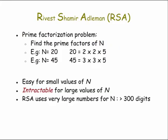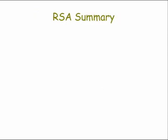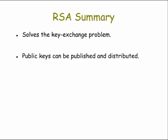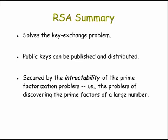That's a high-level summary of the RSA algorithm. Let's summarize its key features. First, like Diffie-Hellman, the RSA algorithm solves the key exchange problem. Unlike Diffie-Hellman, however, the RSA public keys can be widely published and distributed rather than needing to be shared among parties in an encryption transaction, making it especially well suited for internet encryption. Finally, RSA is secured by the intractability of the prime factorization problem — the problem of trying to discover the prime factors of a very large number. Here again, we see intractability being used to protect information, just as we did when we used it to help protect passwords from brute force attacks.